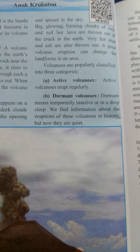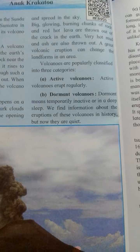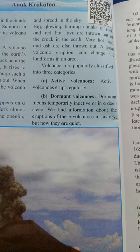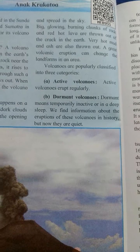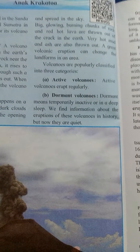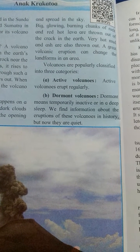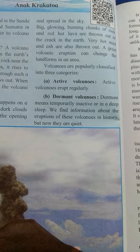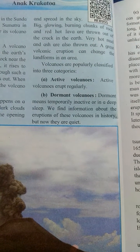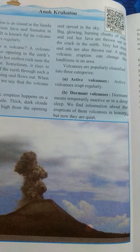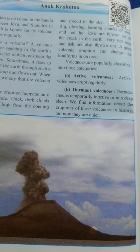The second type is dormant. Dormant means nidristo — it means temporarily inactive or in deep sleep. We find information about the eruption of these volcanoes in history, but now they are quiet.